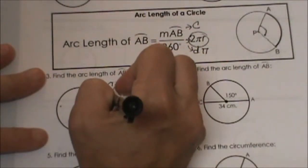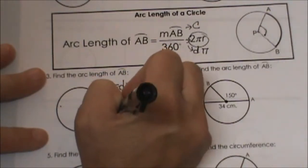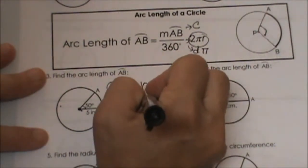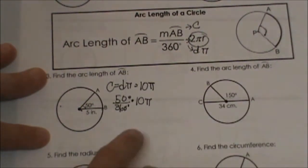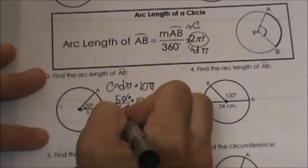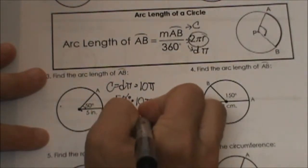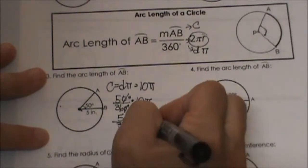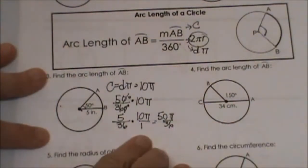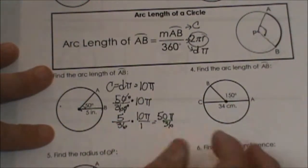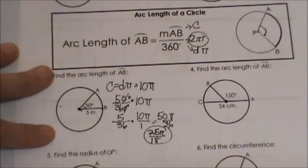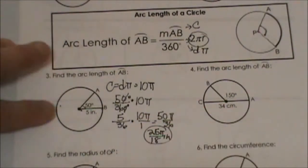Well, I only have 50 degrees out of 360 degrees. So you are going to take 50 over 360 times dπ or 10π. So both of them have 0 so I can divide by 10 and just cancel the zeros out. So 5 over 36 times 10π over 1. We always have it over 1. So I have 50π over 36 and that will reduce. Both are divisible by 2. So what is that going to be? 25π over 18, and that would be in inches. And there we go.